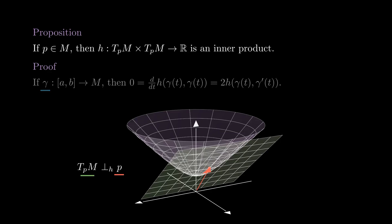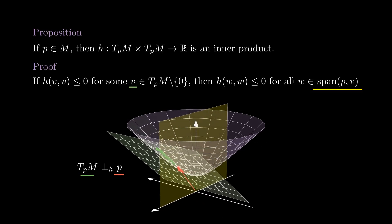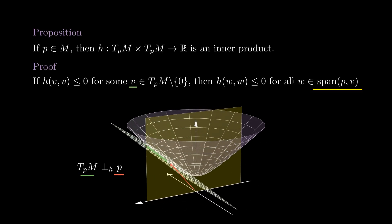Now if h fails to be an inner product when restricted to T_p M, there would be a non-zero vector v with h not positive. But we know that h(p,p) is minus 1, so if that was the case, h restricted to the two-dimensional plane spanned by p and v would be non-positive definite.